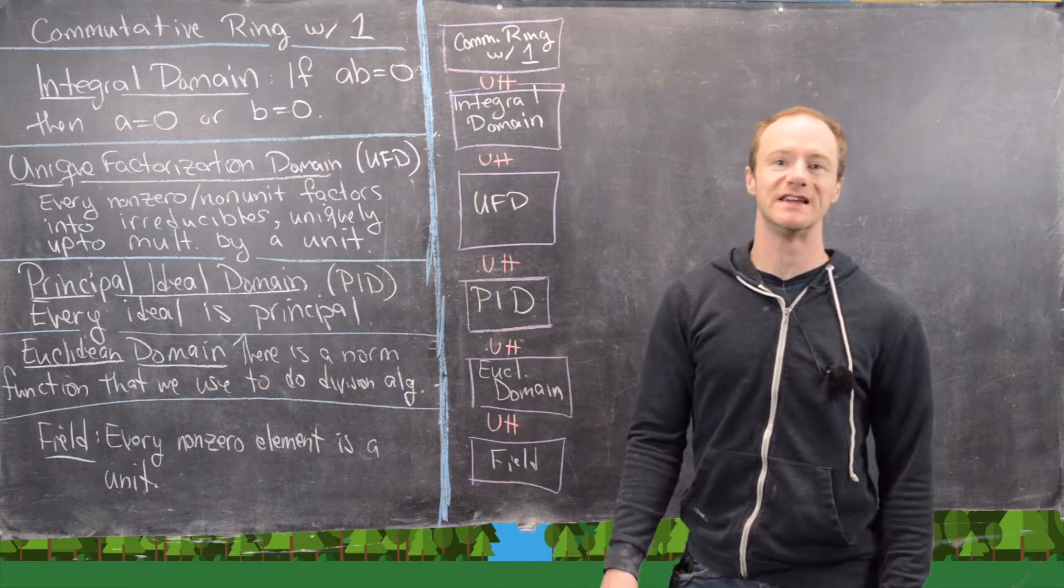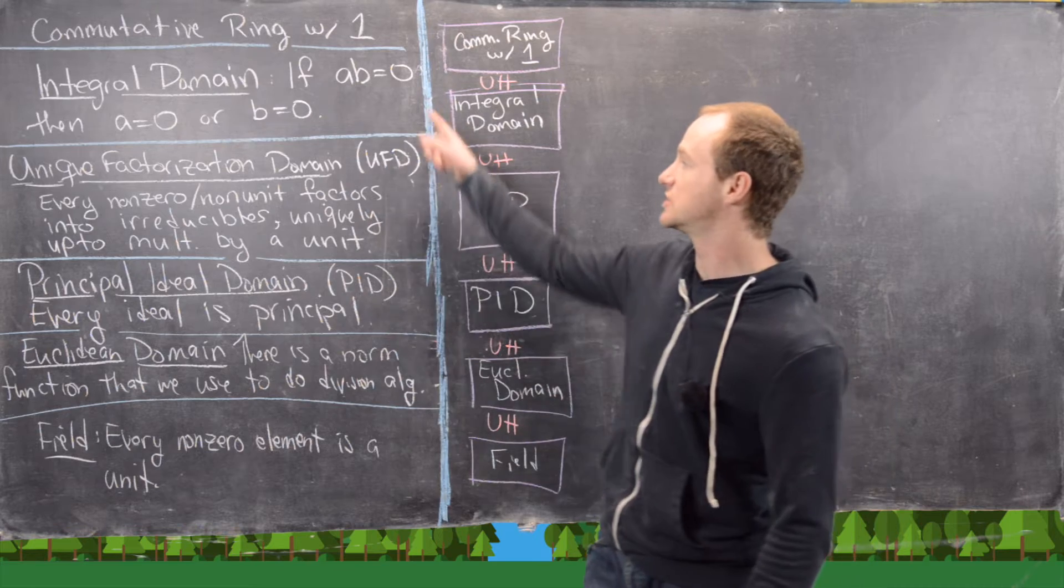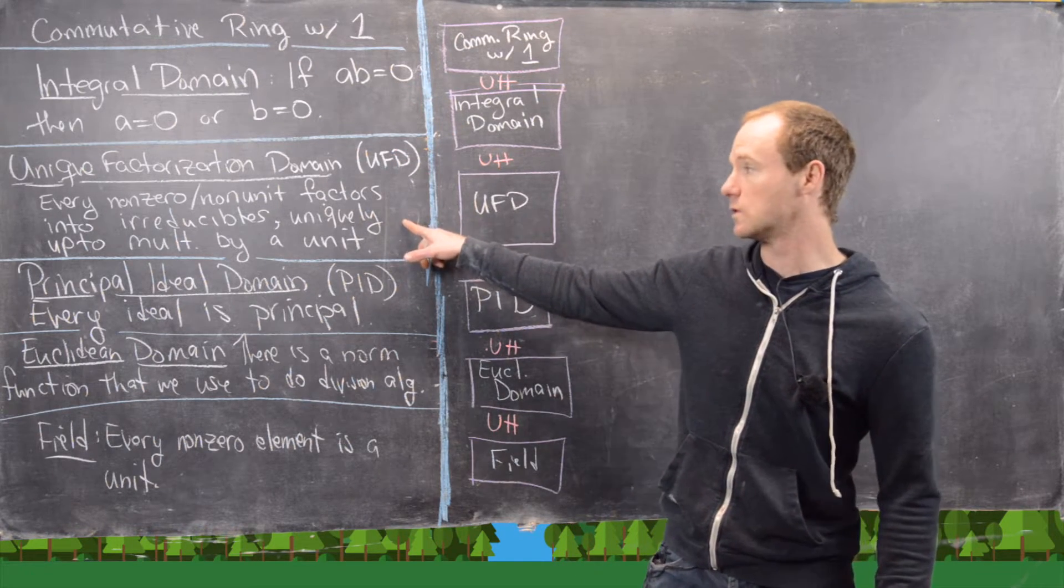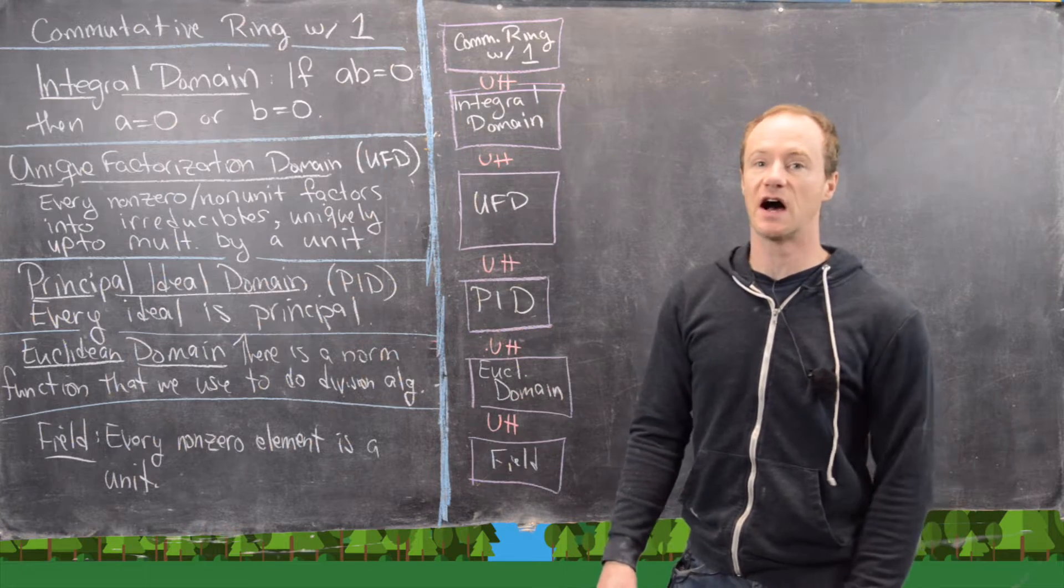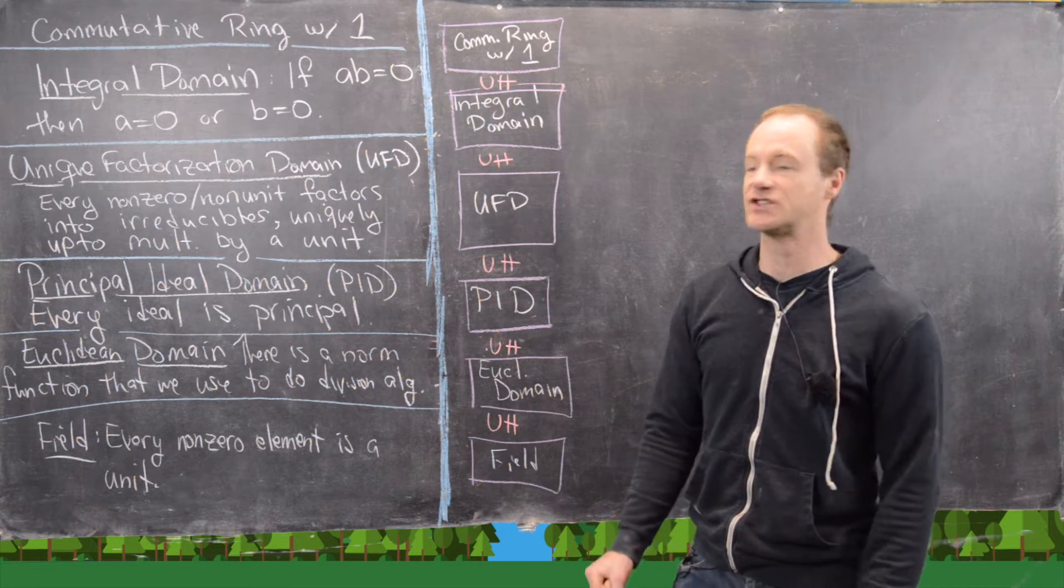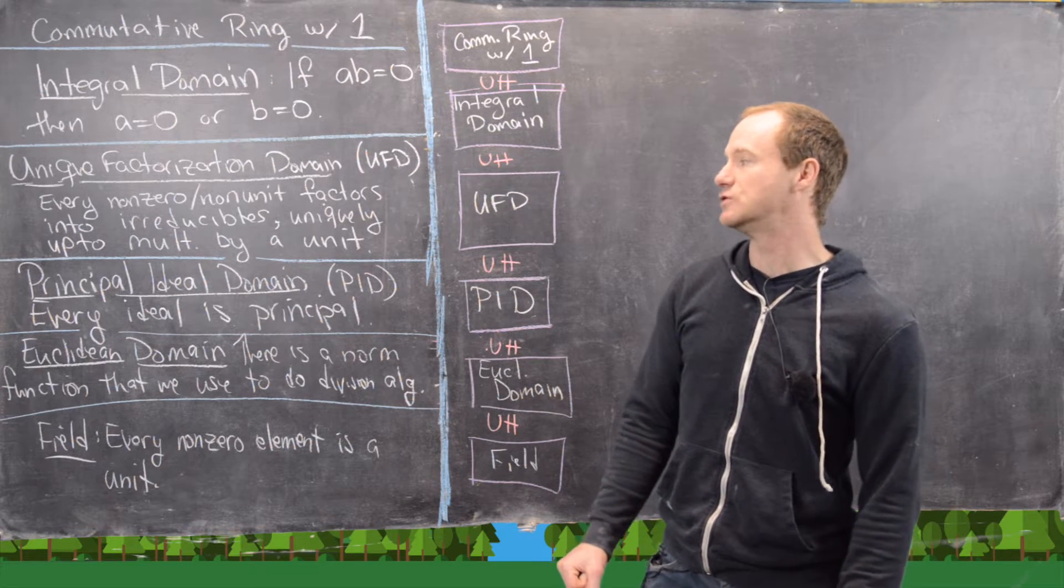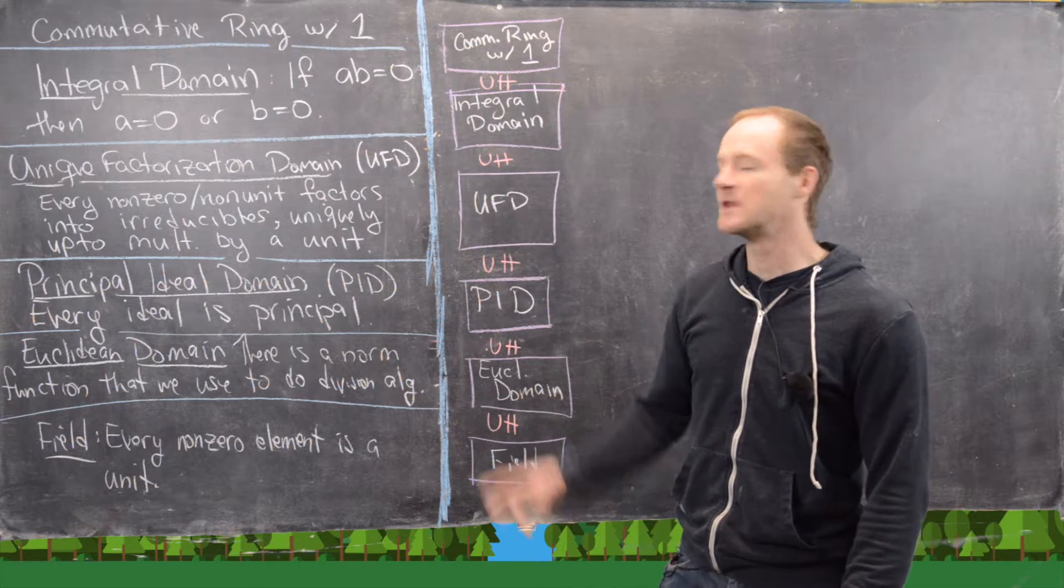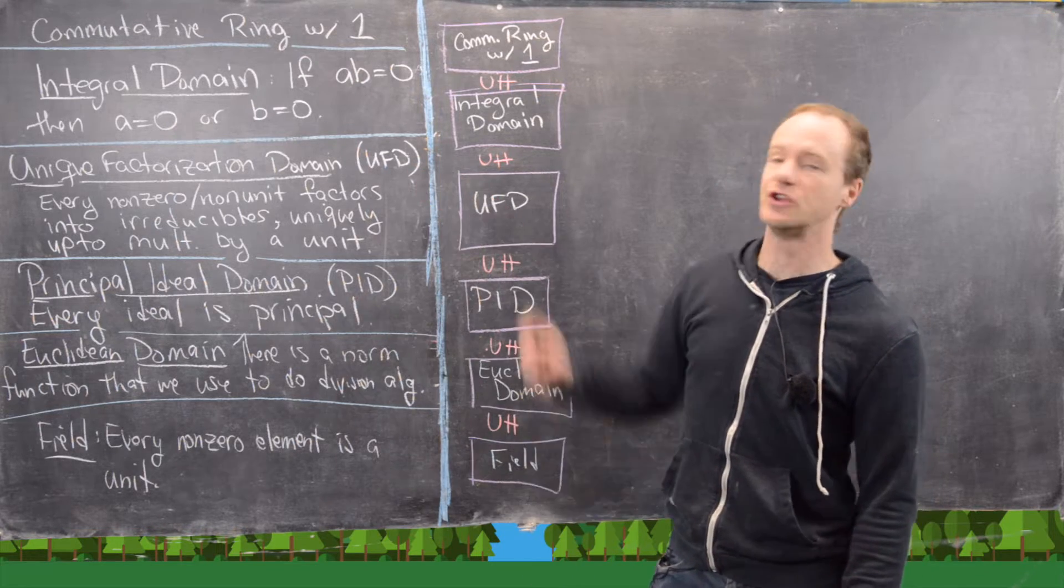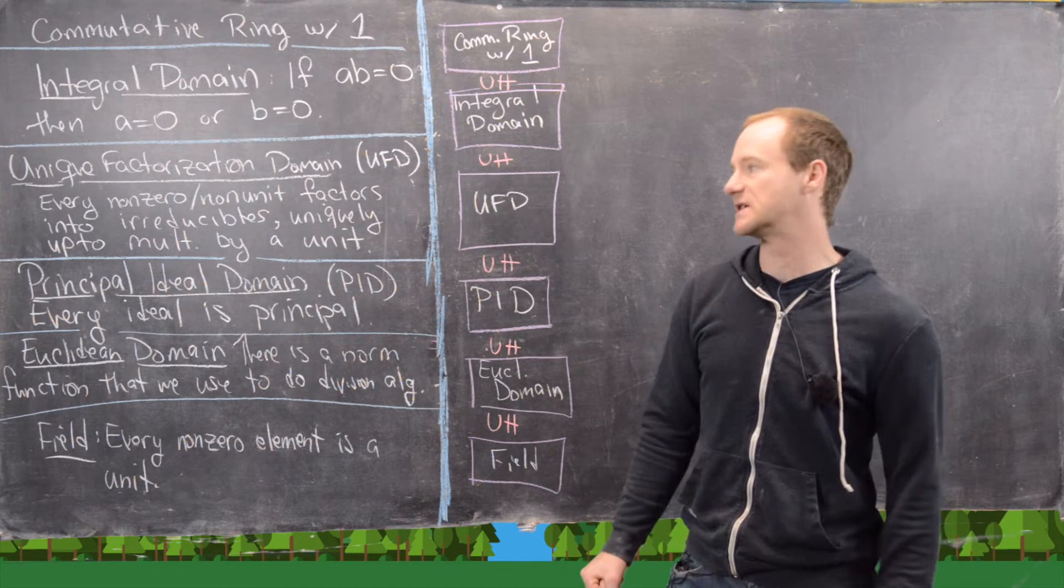Next there's something called the unique factorization domain, which is a type of integral domain that satisfies the following rule. Every non-zero non-unit will factor into irreducibles. And that factorization is unique up to multiplication by a unit. I'll let you guys look at videos we've done about unique factorization domains, or UFDs, to get all of the precise details.